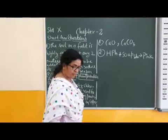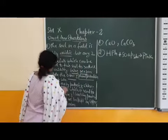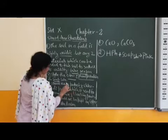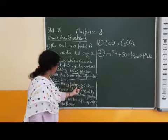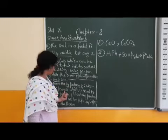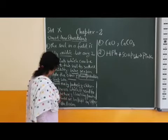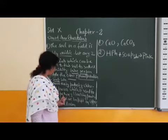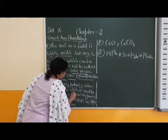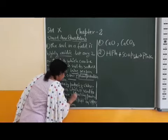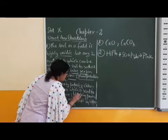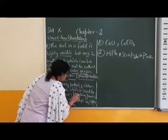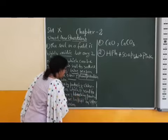Then next question. Name the byproduct of chloralkali process which is used for manufacture of bleaching powder.